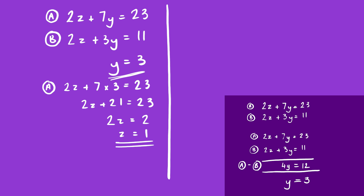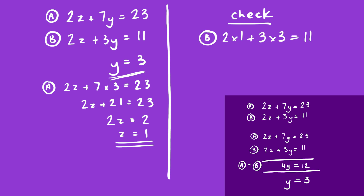We can check our answer by substituting both values into the equation we haven't used yet — equation B. So 2 × 1 + 3 × 3 = 11; that's 2 + 9 = 11, and it is. That's a really nice thing about these: you can check your answers at the end, because if you've got it right, it will work in both starting equations.